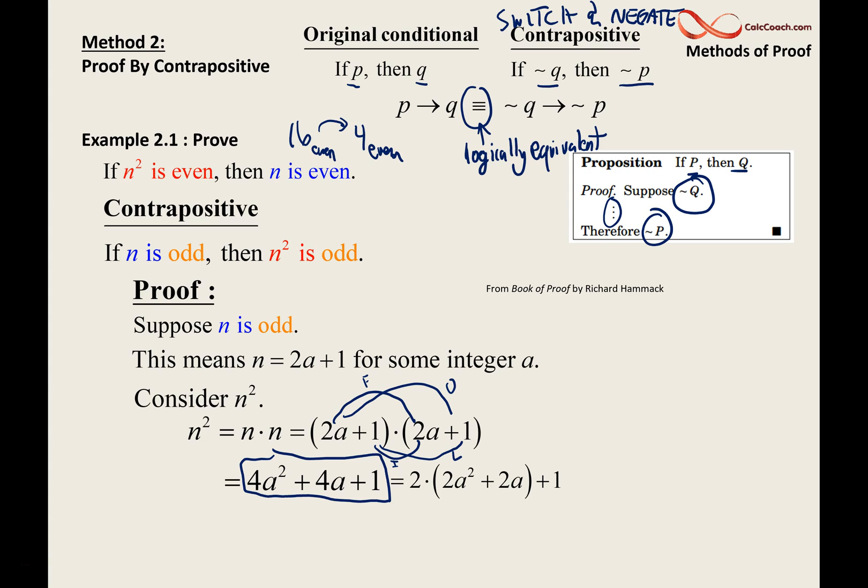Pull out a 2. What you're left with will be 2a squared plus 2a. Recast that as a different variable, w. What you're looking at then is n squared written as twice an integer plus one. W is just going to be based on what a is, and a is just any integer. W is 2a squared plus 2a. So you did it. You just proved that n squared is odd.